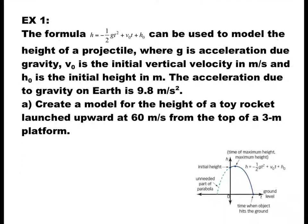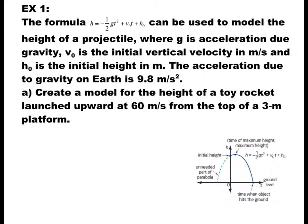The first example is an application in physics. We have the formula h equals negative one-half g t squared plus v-sub-zero t plus h-sub-zero. Here, h is the height, g is the acceleration due to gravity which is 9.8 meters per second squared, t is the time, v-sub-zero is the initial vertical velocity, and h-sub-zero is the initial height where the trajectory is thrown outward.